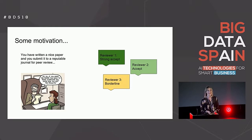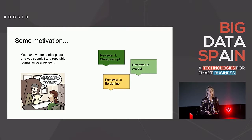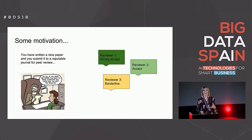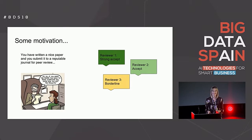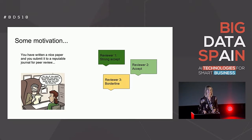Let's start with some motivation. Imagine that you are a researcher, you have super good results, so you decide to write a paper. The paper looks good, so you submit it to a journal. If this is a good journal, it will go under peer review, which means that your fellow researchers will review the paper. Then after a couple of months — or maybe one year — the reviews come out and the editor-in-chief has to make a decision. Imagine reviewer one thought your paper is really great and says strong accept. Reviewer two says accept. And reviewer three has doubts — maybe he likes the results but doesn't like the writing — so reviewer three says it's a borderline paper. Probably in this case, the paper will be accepted.